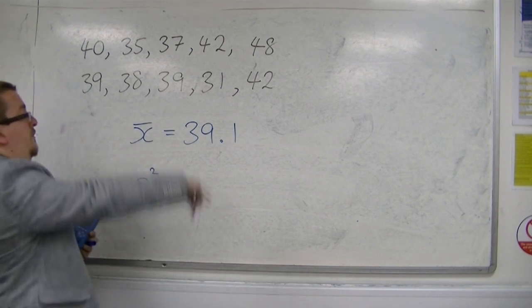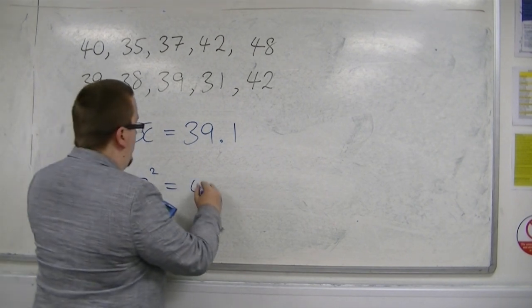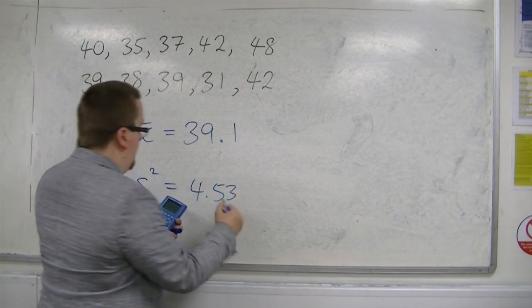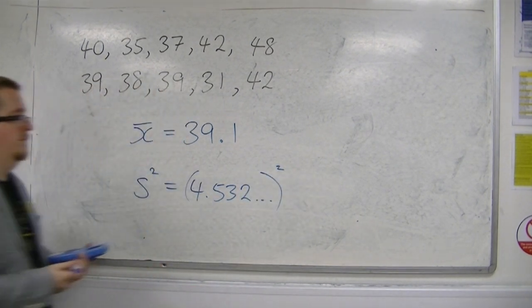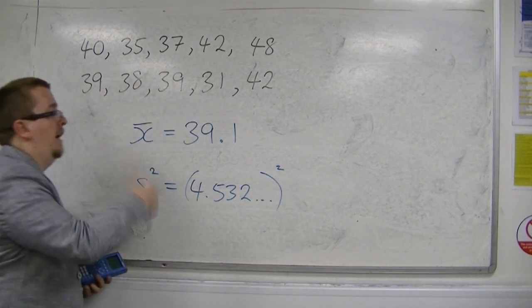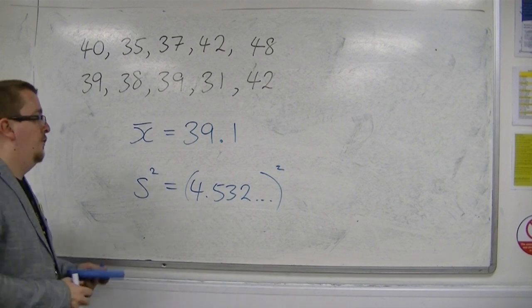An unbiased estimator for the variance would be that number squared. So it's 5.32 squared, and that would be our unbiased estimator for the variance.